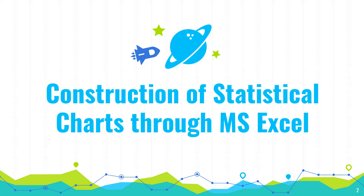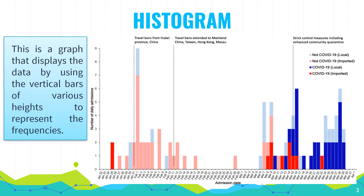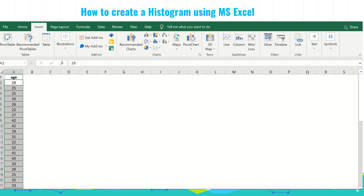We will construct the statistical graphs and charts through Microsoft Excel. The first statistical graph we will discuss in this video lecture is the histogram. A histogram is a graph that displays the data by using vertical bars of various heights to represent the frequencies. This graph is applicable to continuous data. We will use the age of a group of professionals as our data.